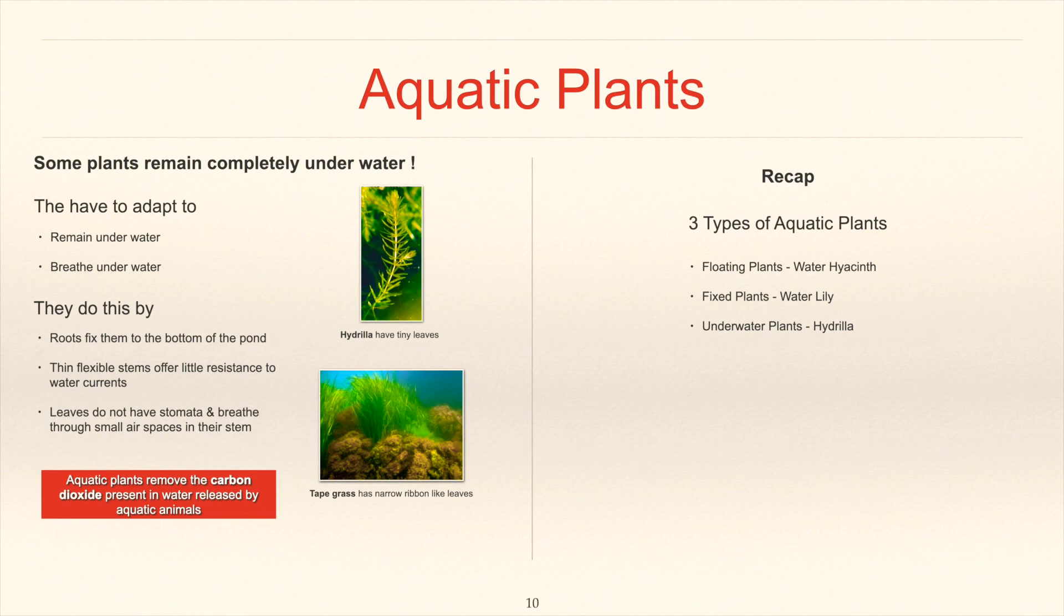Let's do a quick recap. There are three types of aquatic plants. Floating plants like water hyacinth. Fixed plants like water lily. And underwater plants like hydrilla.